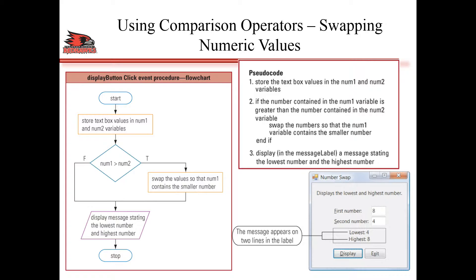In the scenario where the first number is lower than the second number, we don't really have to do anything - just put them in order in the label. Otherwise, we have to swap the two numbers, swap the order of the numbers, and then put it in the label. The flowchart is given on the left.